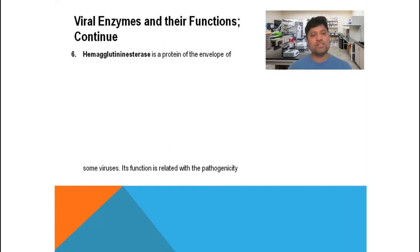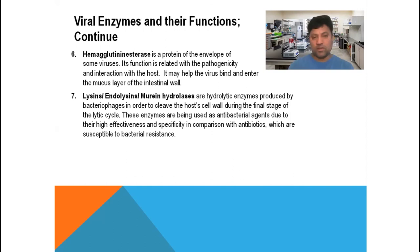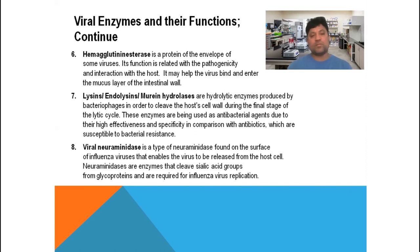The sixth viral enzyme is hemagglutinin esterase, a protein of the envelope of some viruses. Its function is related to pathogenicity and interaction with the host, and it may help the virus bind to and enter the mucous membrane of the intestinal wall. The seventh group consists of lysins, endolysins, and murine hydrolase — hydrolytic enzymes produced by bacteriophage, which are viruses that infect bacteria. These enzymes cleave the host cell wall during the final step of the lytic cycle and are used as antibacterial agents due to their high effectiveness and specificity compared to antibiotics, which are susceptible to bacterial resistance.